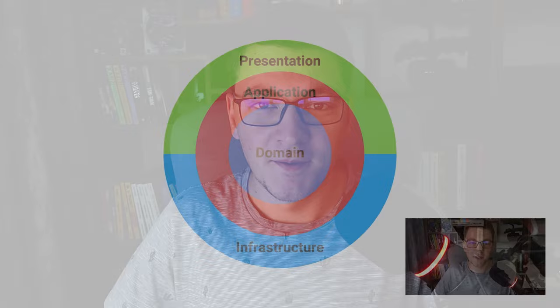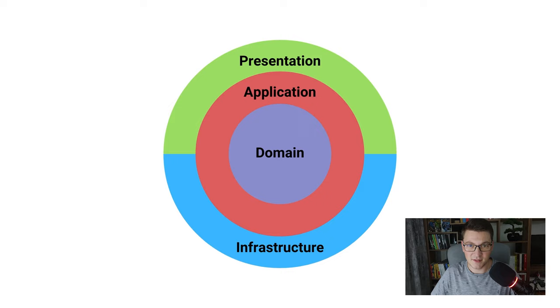Let's first start out with what is clean architecture. Here you can see the visual representation of clean architecture. It has four distinct components and these are called layers of the clean architecture. In the center we have the domain layer which represents the core of the system. Around the domain layer you have the application layer which orchestrates the domain layer and tells it how to perform the business logic. On the outsides of the architecture we have the infrastructure and presentation layers.